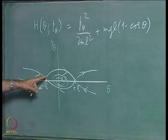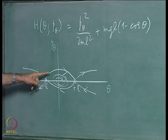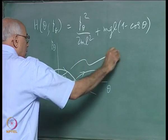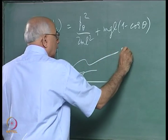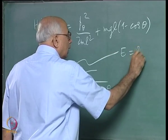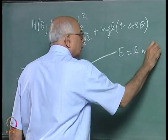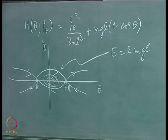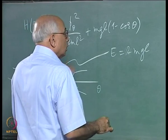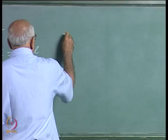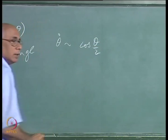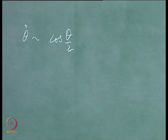We were interested in finding the explicit solution on that particular trajectory. On it, the energy takes its value 2mgl, which is the maximum value of the potential energy, and we also saw that θ_dot is proportional to cos(θ/2) on that trajectory. We saw this last time and all you need to do is integrate this.